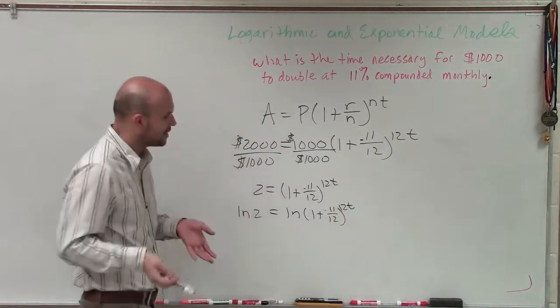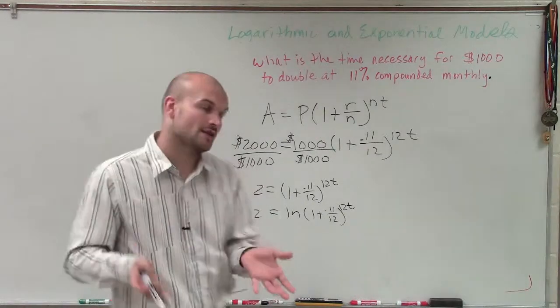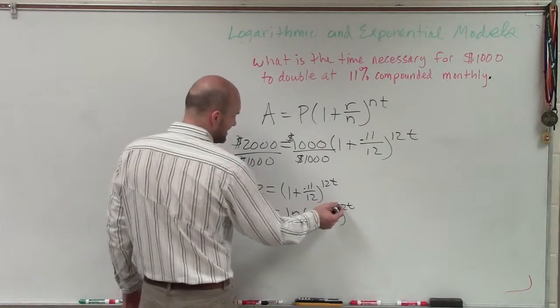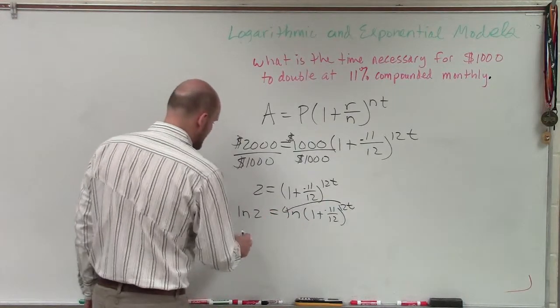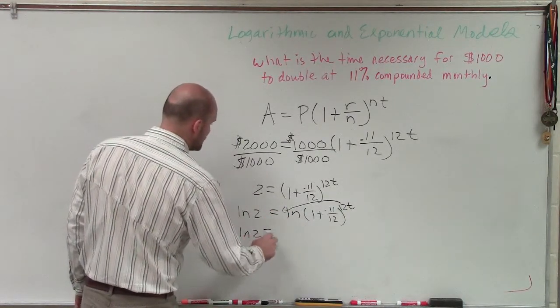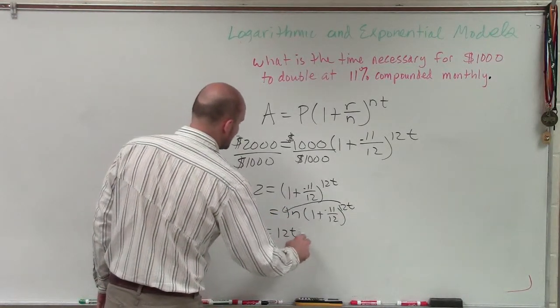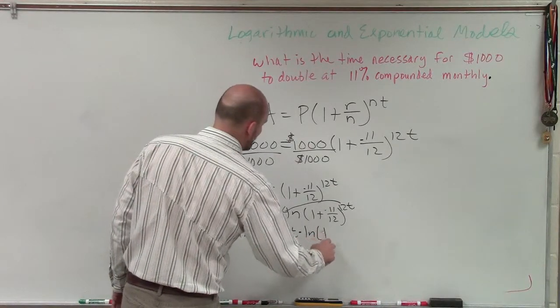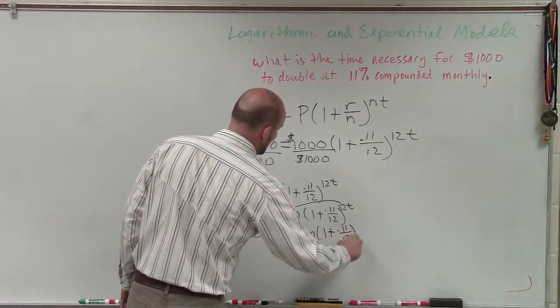Now remember, by applying our rules of logarithms, I can now take this 12t and put it in front. So therefore, I have ln of 2 equals 12t times ln of 1 plus 0.11 divided by 12.